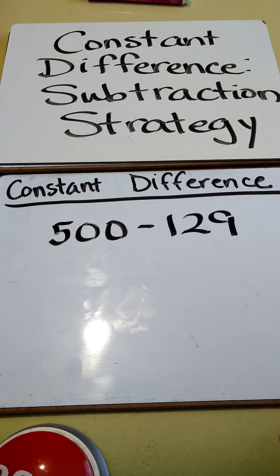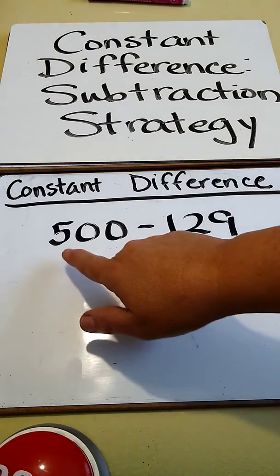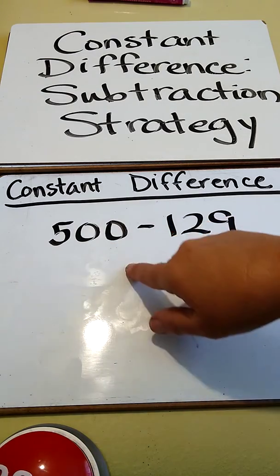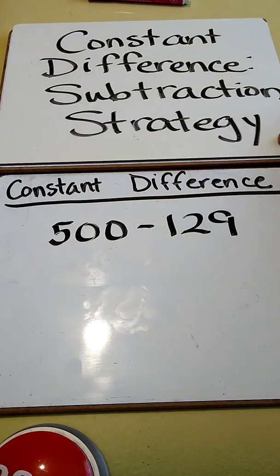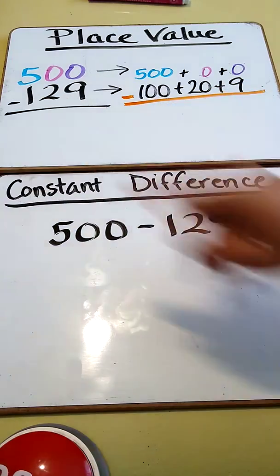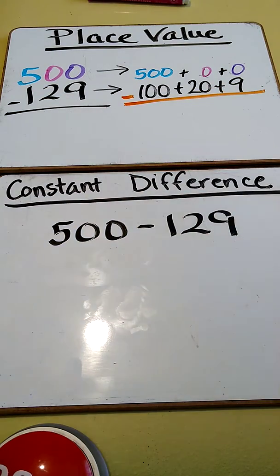That's probably one of the only places I would use it, but it's a good strategy to use when subtracting across zeros, because this can get confusing if you're not understanding your place value strategy, which, before we start, I'm going to review the place value strategy so you see how these two go together.